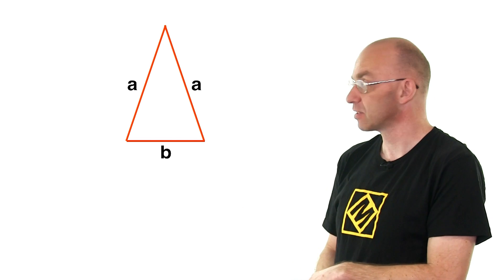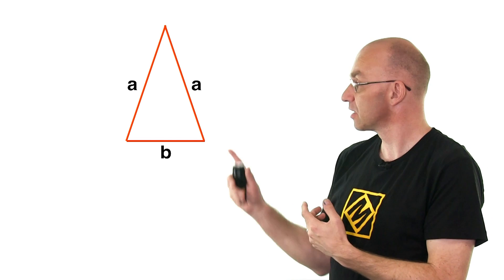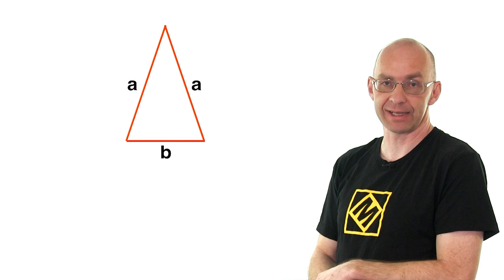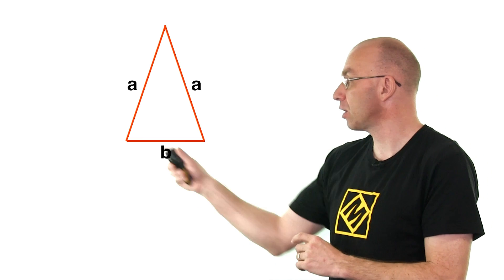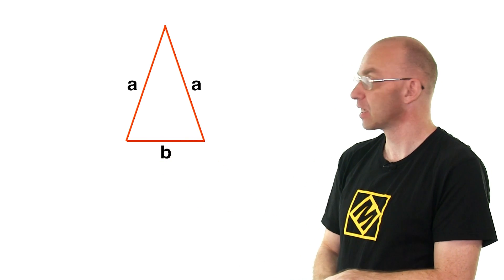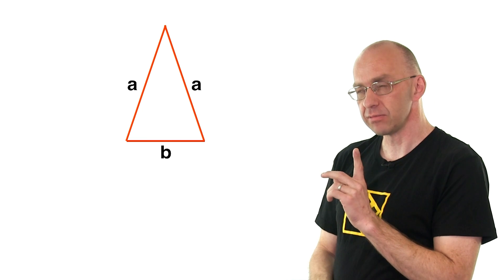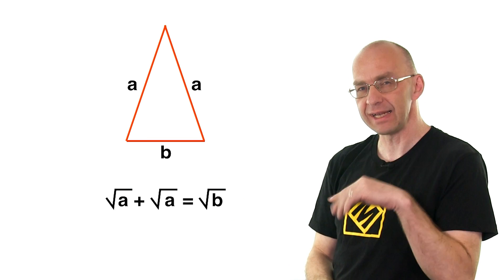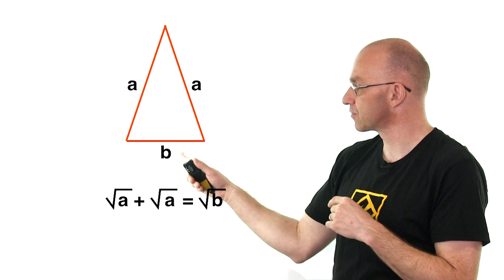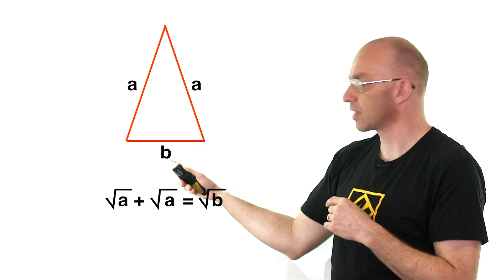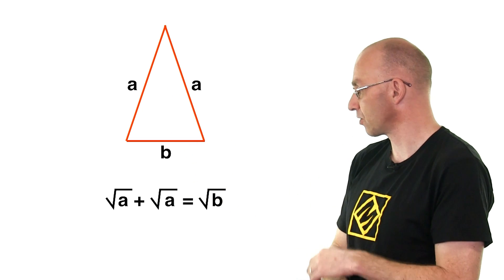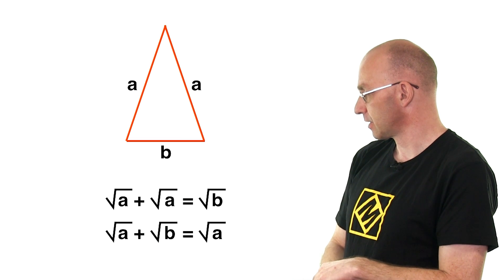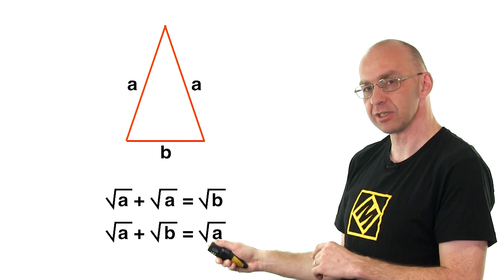So here's an isosceles triangle. What makes a triangle isosceles? We've got two sides that have equal lengths. Now what does he say? He says if I do the square root of this and add to it the square root of that, you get the square root of this. But he also says you can do this with any two sides. So I should also be able to start square root of this plus square root of that is square root of that. So let's also write down that one here.